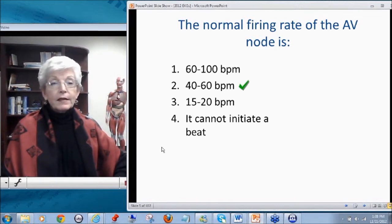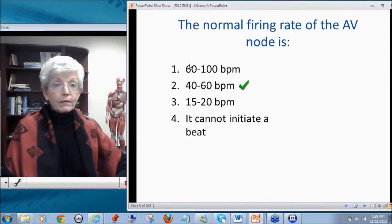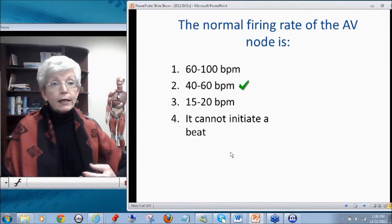Number one is the normal firing rate of the sinoatrial node. The sinus node would be 60 to 100 beats a minute. This is the normal firing rate of the AV node. This is the normal firing rate of the ventricles themselves should higher levels fail. And yes, the AV node can act as a pacemaker. Remember that any part of the heart, even a piece of the ventricle or atrium, not the nodes or anything, can initiate a beat. Those were called ectopic beats.